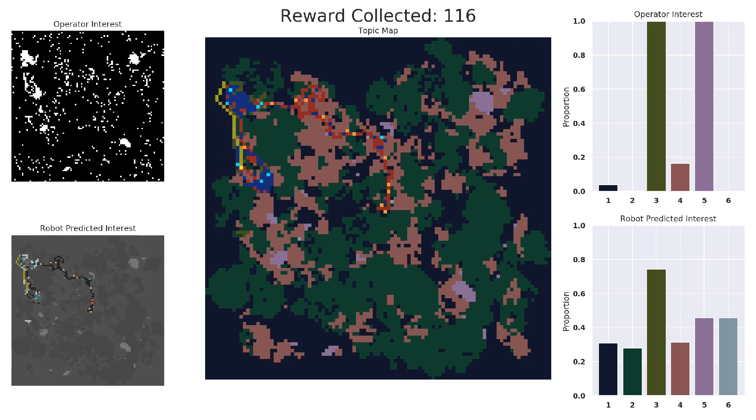To the top right is a randomly generated interest profile that shows which topics the simulated scientist is most interested in. And in the top left, there is an interest map that shows where all the interesting observations are.